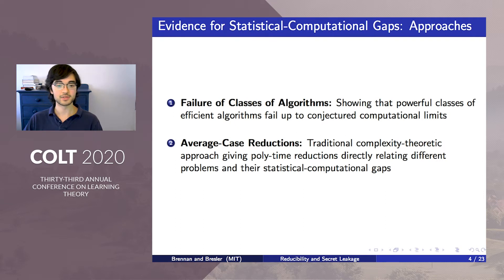In light of this emerging trend, there has been a large effort to gain rigorous evidence that these gaps are inherent and there aren't just better algorithms that we're missing. These approaches can broadly be classified into two categories: showing that powerful classes of efficient algorithms fail below the conjectured limit, and the traditional complexity theoretic approach of reducing between problems and directly relating their statistical computational gaps to one another.